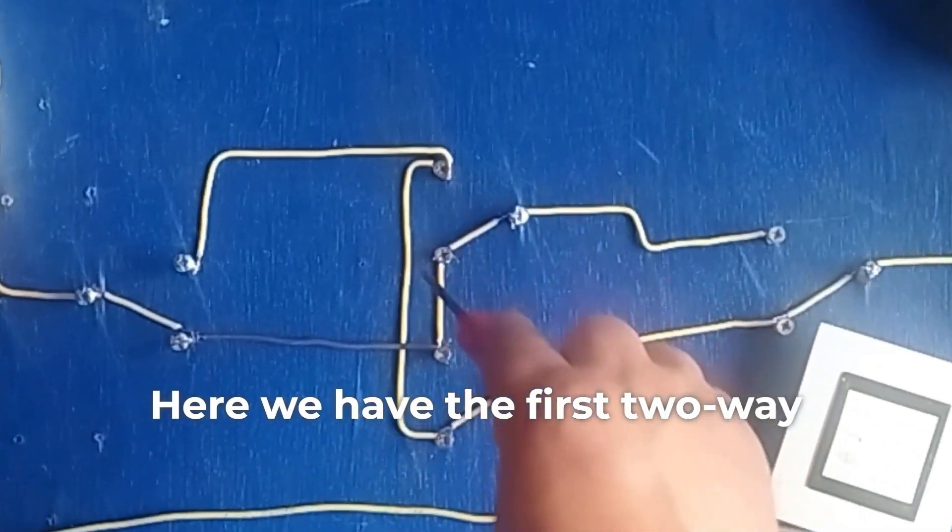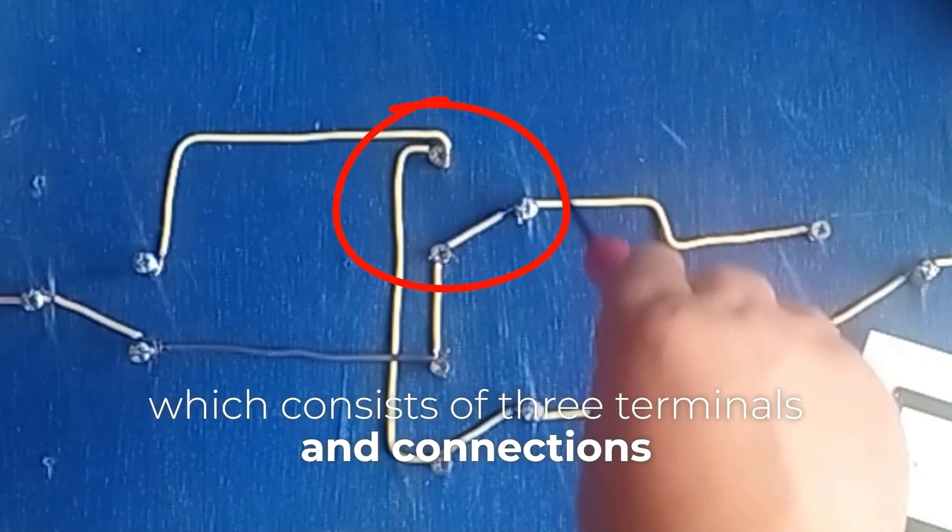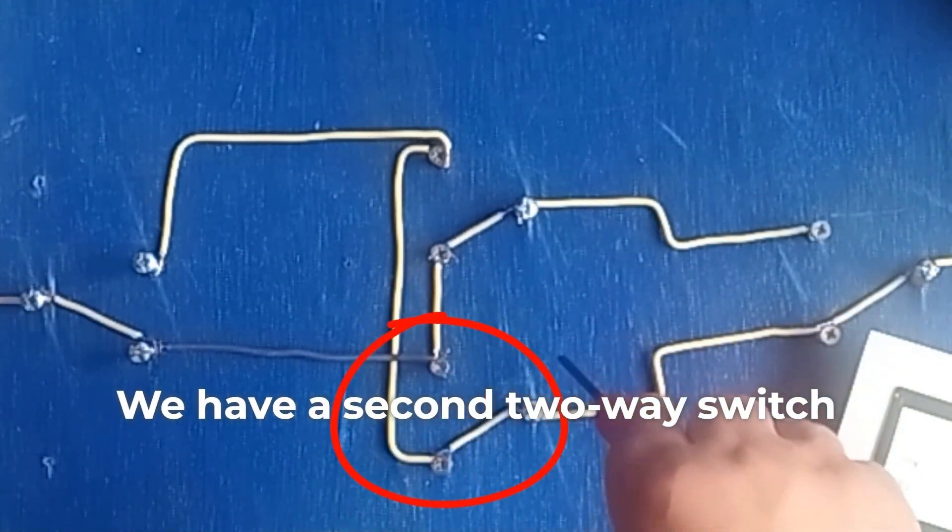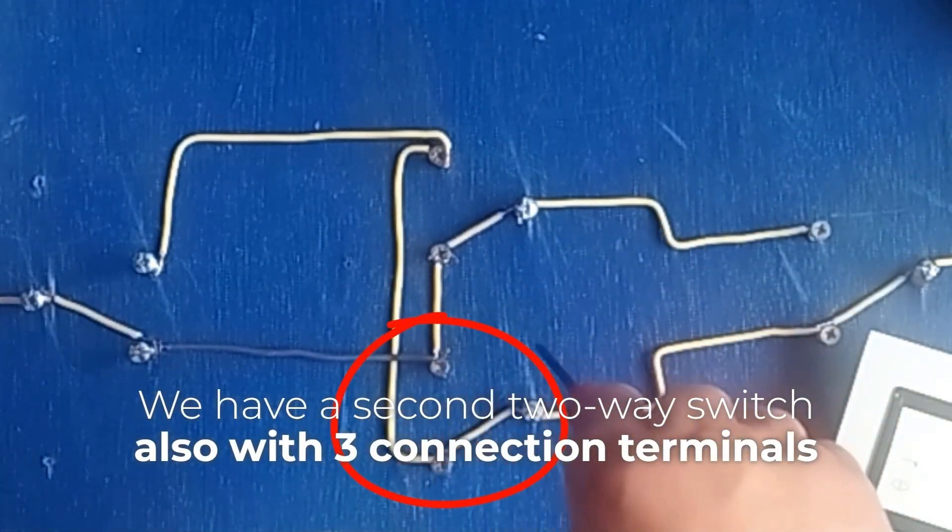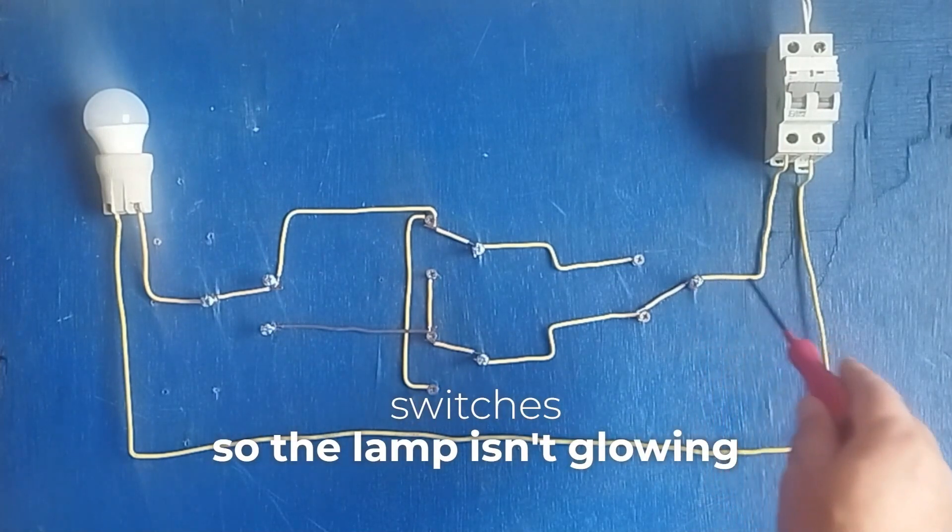Here we have the first two-way switch which consists of three terminals and connections. We have a second two-way switch also with three connection terminals. As we can see, the circuit is open at all switches so the lamp isn't glowing.